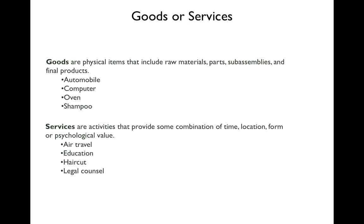Here are some examples of goods versus services. Goods include everything from raw materials to partially assembled items to the final product. Examples include your car, the computer you're using to watch this video, an oven, and shampoo. Services are activities that provide some combination of time, location, form, or psychological value.